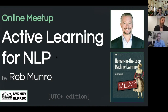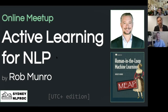I'm absolutely thrilled to introduce Rob Munro today to talk about active learning for NLP. Rob is a friend of Sydney NLP, back for another round after joining us in March last year to talk about transfer learning and human-in-the-loop NLP. Rob has a bit of a virtual book tour at the moment after the release of his excellent Human in the Loop Machine Learning book — big congrats Rob.